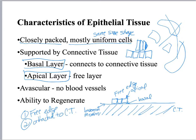Epithelial tissues are also avascular, meaning they have no blood vessels, but they have a really easy time regenerating. They can go through mitosis and create copies of themselves and replace themselves pretty easily.